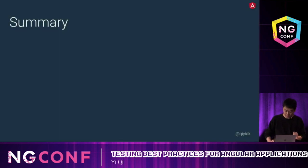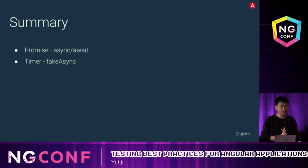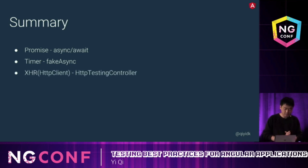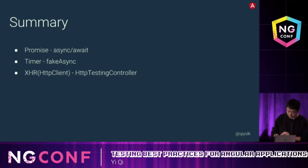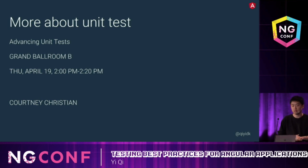To summarize: for Promises, we prefer async/await. For timers, we use fakeAsync. For testing XHR, we prefer HttpTestingController. If you want to know more about unit tests, you can watch another talk happening tomorrow, presented by Courtney.